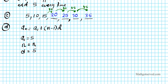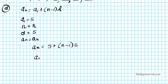Substituting into the formula: a_n = 5 + (n − 1) × 5. Distributing the 5 gives a_n = 5 + 5n − 5. Combining like terms, 5 and negative 5 cancel, so our explicit formula simplifies to a_n = 5n.